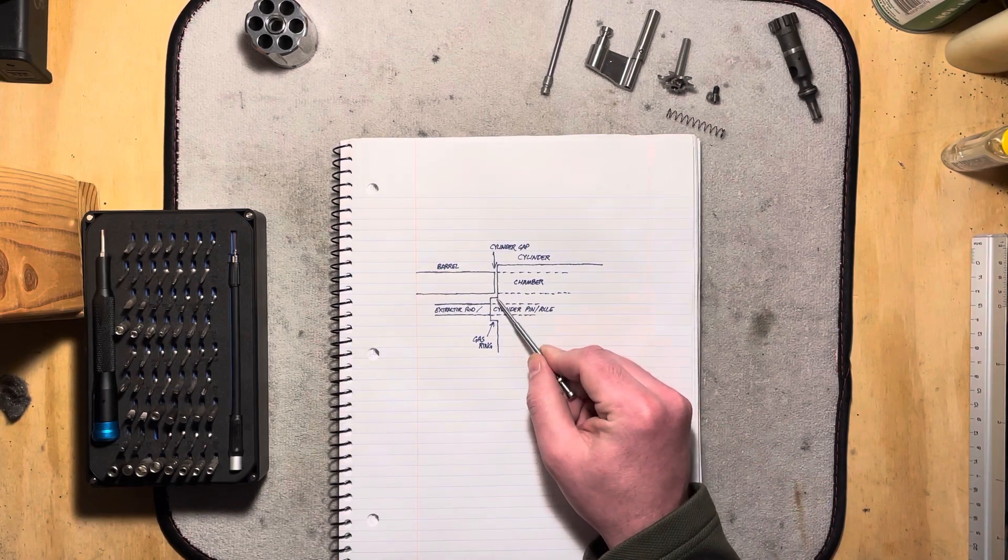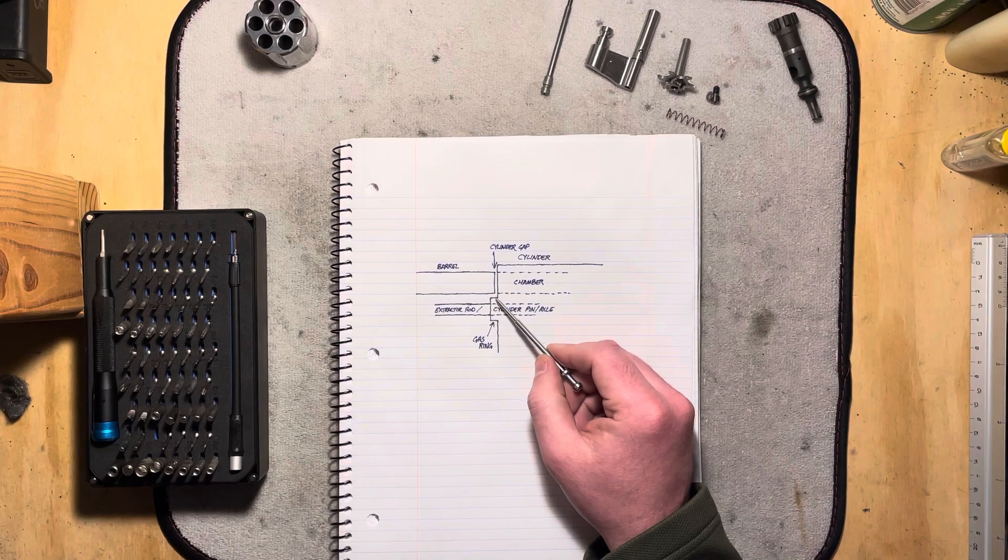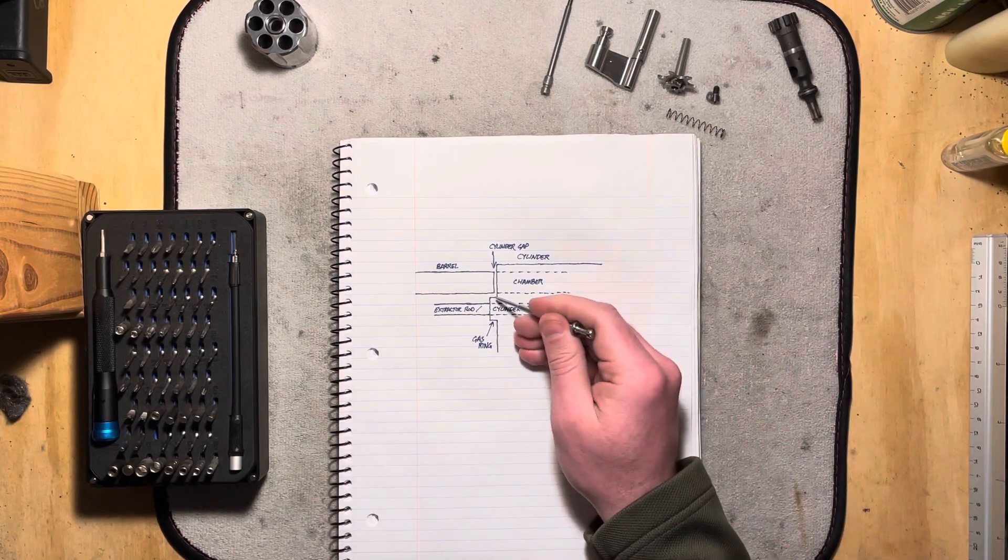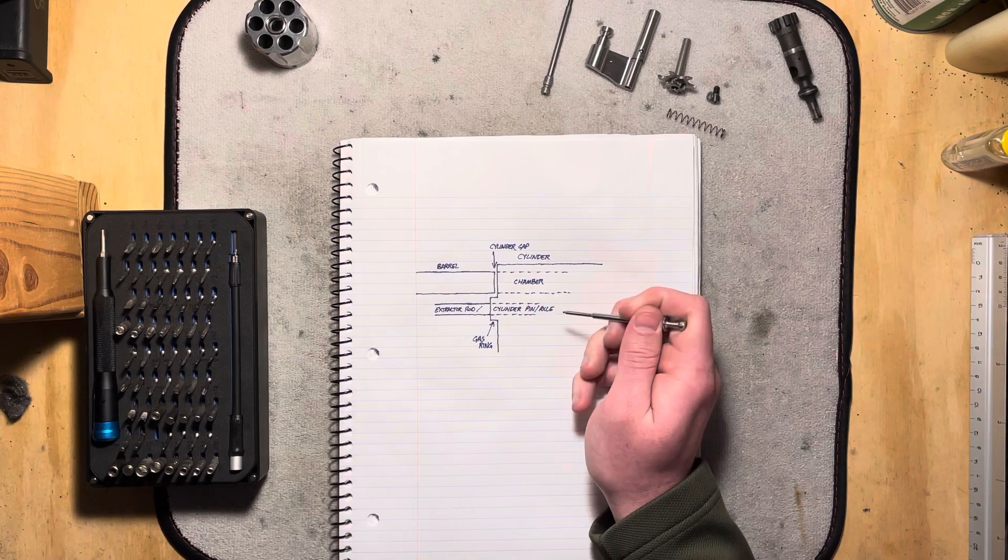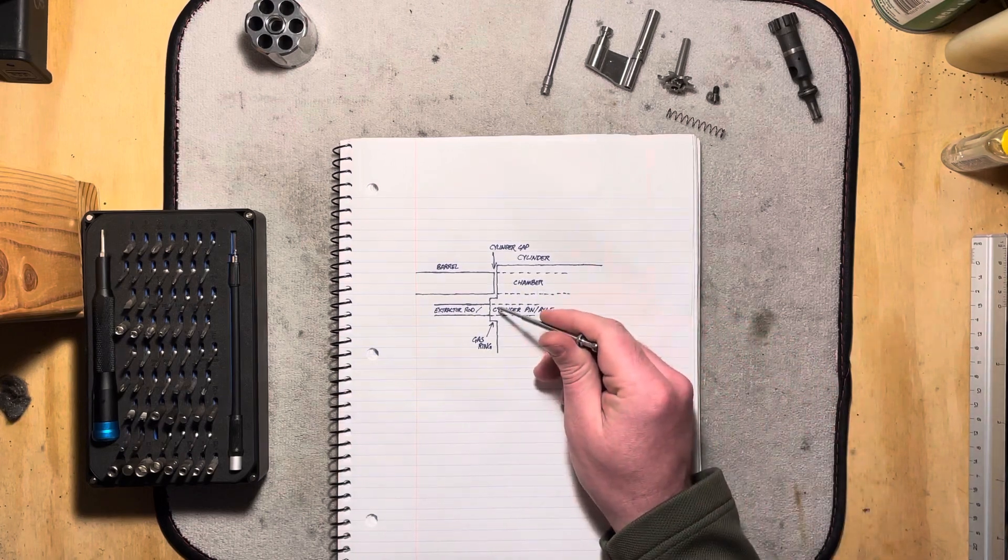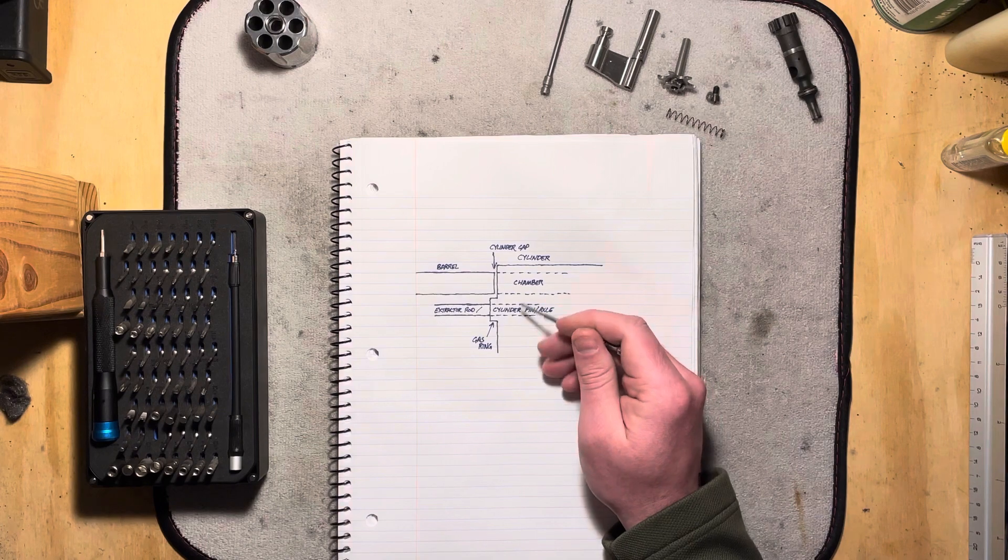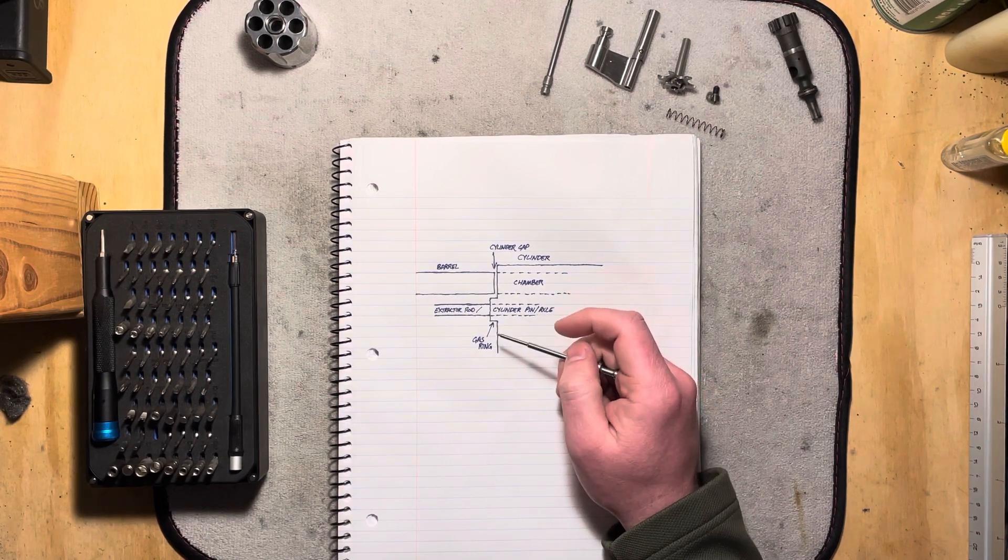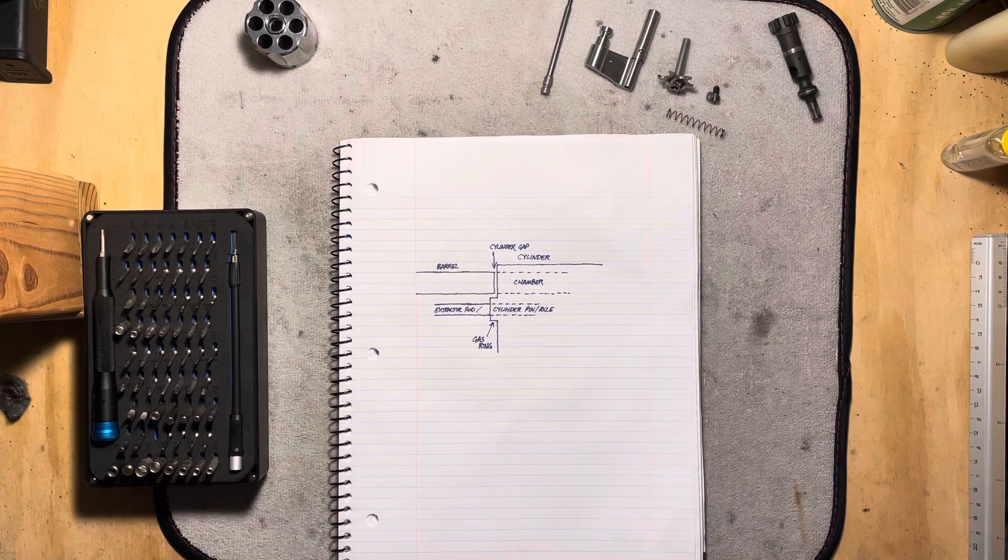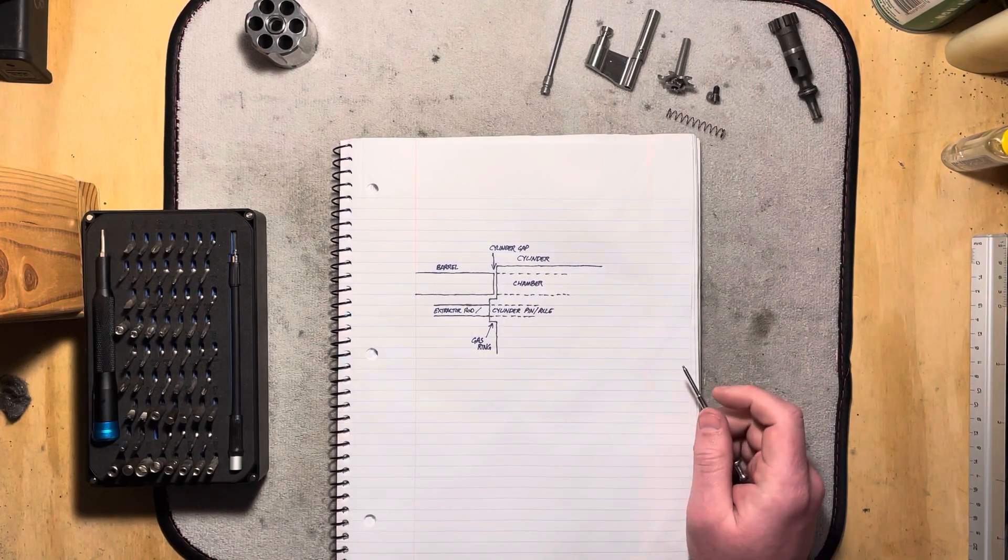And if you have the cylinder attaching to the cylinder pin, the yoke or crane, however you want to call it, directly right here in line with the cylinder gap, you run two risks. One is that you can end up with gas cutting on your cylinder pin, on your axle that the revolver is revolving on. Or you end up with deposits of carbon and soot that will then gum up the works here. It can make it hard for that cylinder to rotate smoothly. It can make it hard to cock the revolver. If it's a double action revolver like the Python is, it can make it a very stiff trigger to where you're overcoming that resistance of all that grit, all that debris that's building up there on your axle, on your cylinder pin.